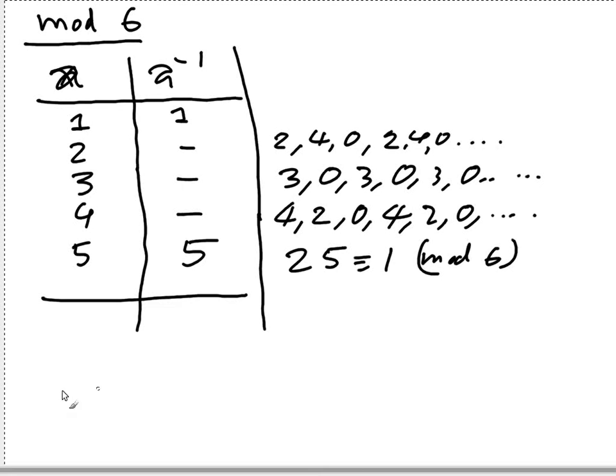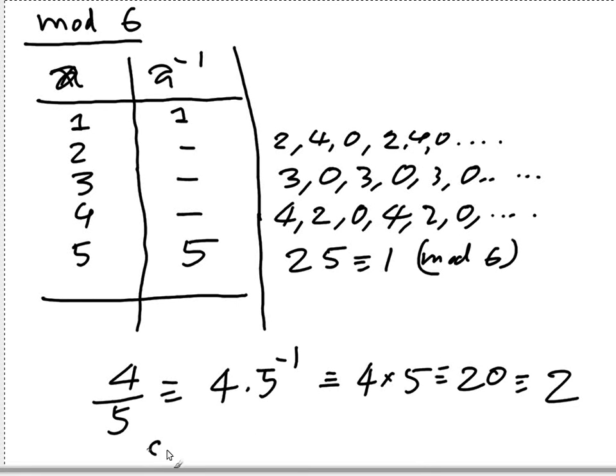So for 5, we see that 5 times 5 is 25 and that's 1 mod 6. So the inverse modulo 6 for 5 is 5. Now if you want to find 4 over 5, we can say 4 is equal to 4 times the multiplicative inverse modulo 6 of 5, and that's 4 times 5, that's 20, and mod 6 you get 2.